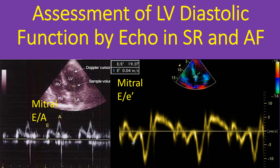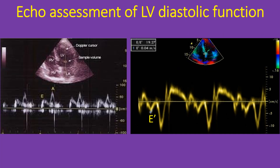Echocardiographic assessment of left ventricular diastolic function with special reference on diastolic function assessment in atrial fibrillation. Though there are several parameters for evaluation of left ventricular diastolic function by echocardiography, the most commonly used are the Pulse Doppler Mitral E by A ratio and Tissue Doppler Mitral E by E' ratio.